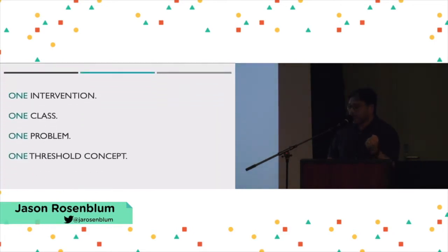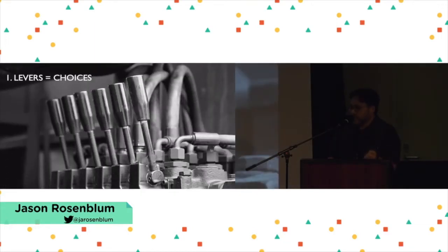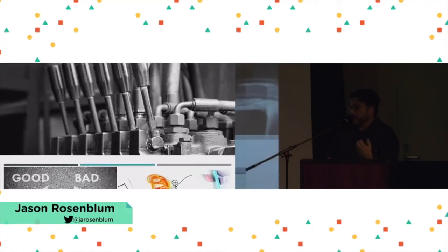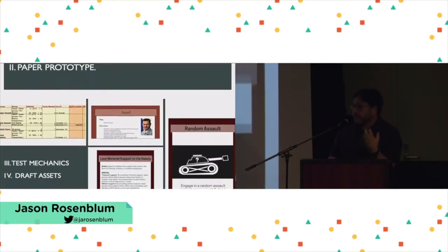I'm suggesting you take one intervention in one class, take one problem you'd like to pick apart, pick out one threshold concept that characterizes that problem, and ask yourself: what and why are students having problems with this concept? What are the stumbling blocks, the misconceptions, the confounding variables in their learning? Use that information to design your levers. Then prototype it — sketch something out on paper. It doesn't have to be fancy; just sketch out the choices, the consequences, the decisions that lead to more choices, and define your game's possibility space.